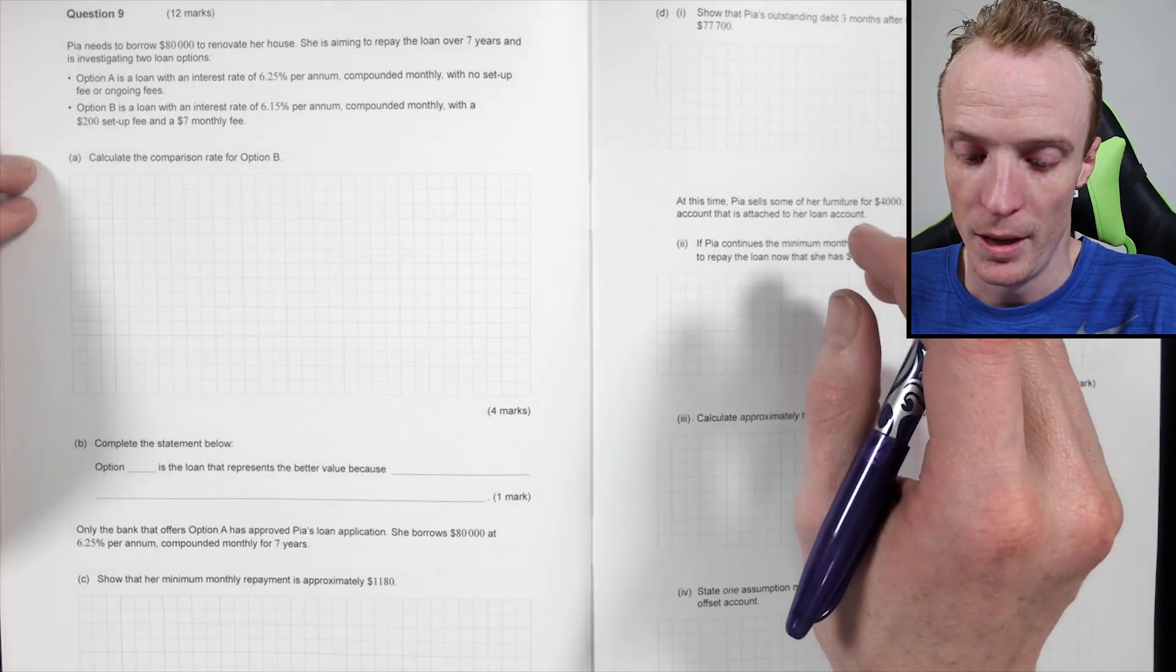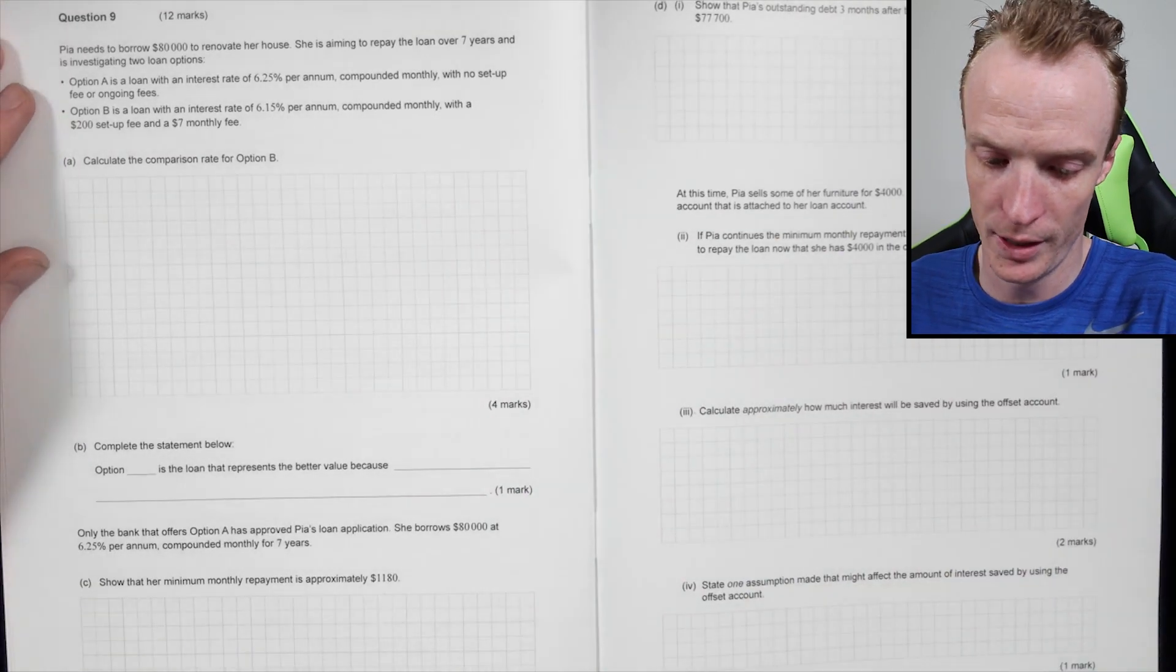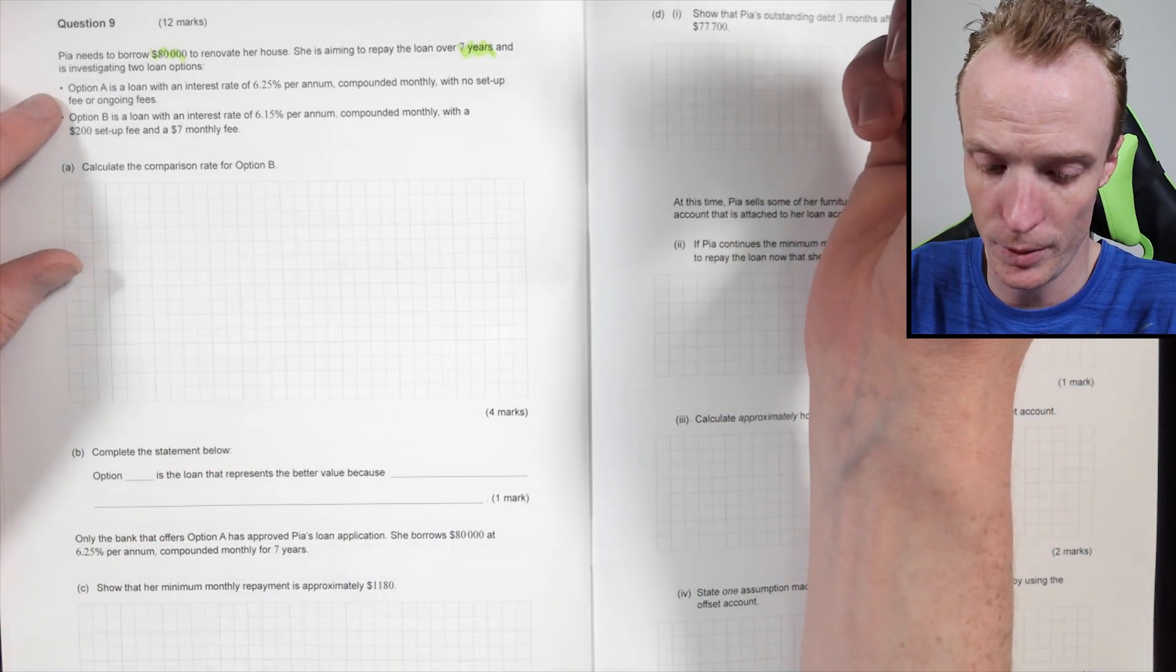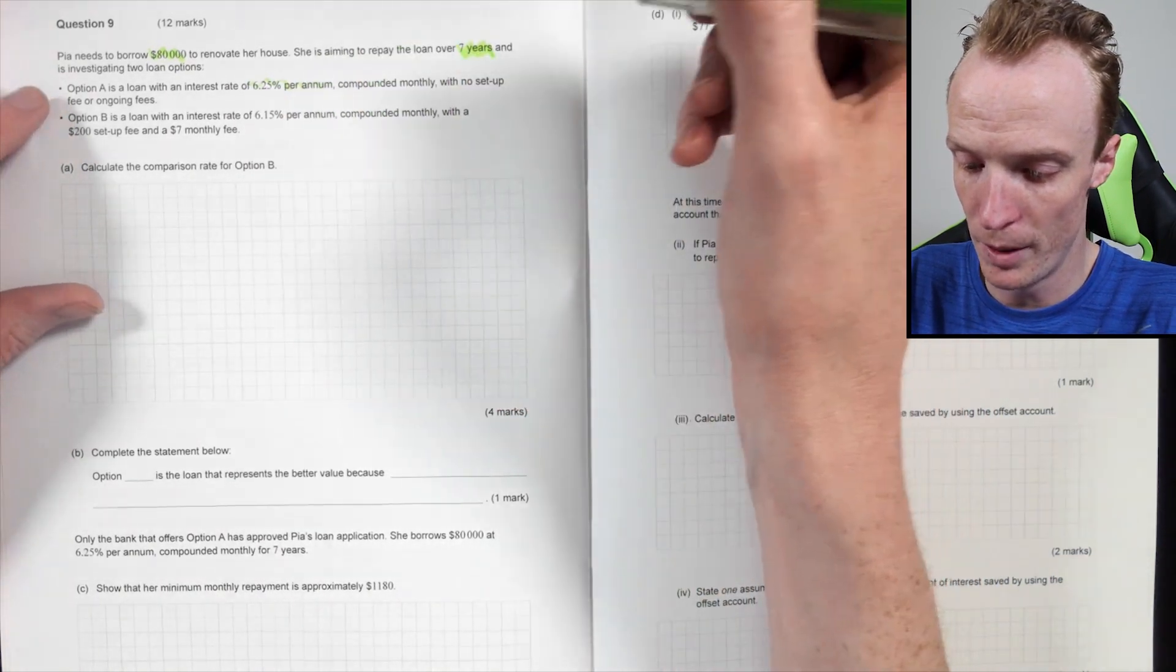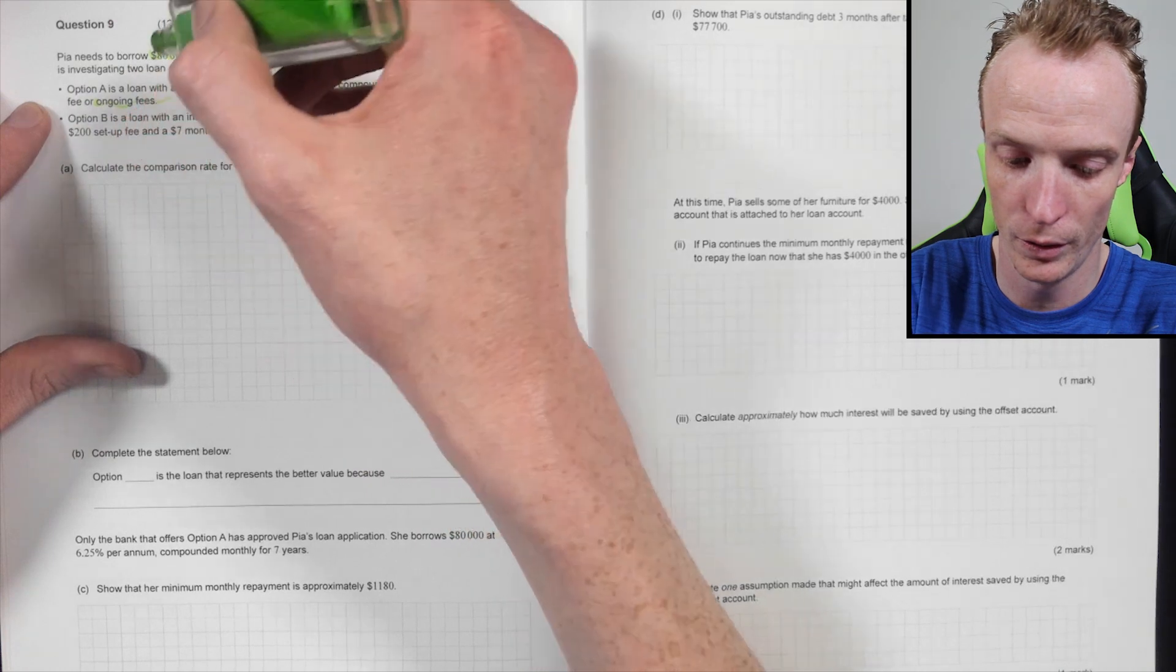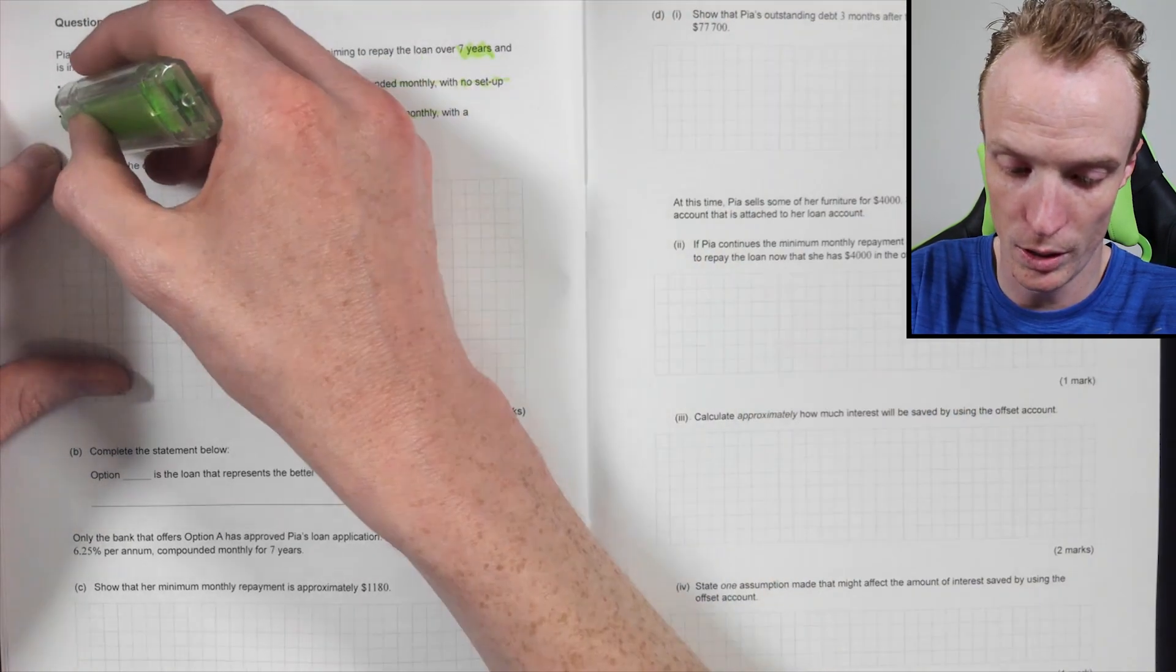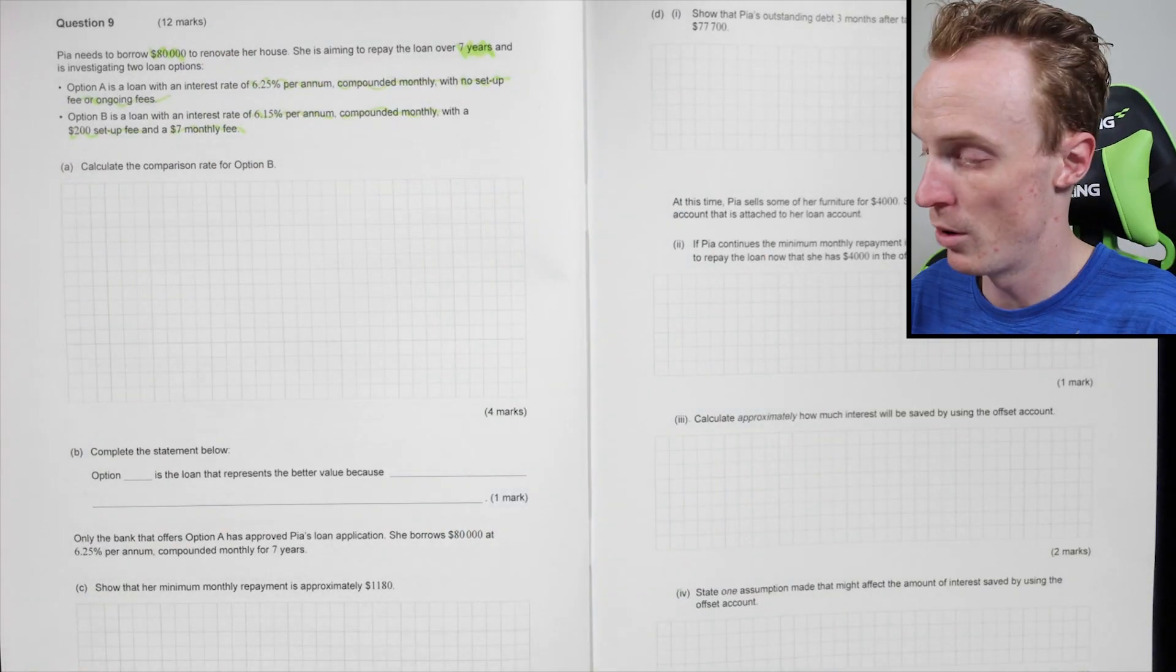Alright, so question nine. Pia needs to borrow $80,000 to renovate her house. She's aiming to repay the loan over seven years. Let's just highlight some money and some time. And is investigating two loan options. Option A has a loan of 6.25% per annum, compounding monthly with no setup and all ongoing fees. Option B is a loan with an interest rate of 6.15% per annum, compounding monthly again, with a $200 setup fee and $7 monthly fee. Calculate the comparison rate for option B.